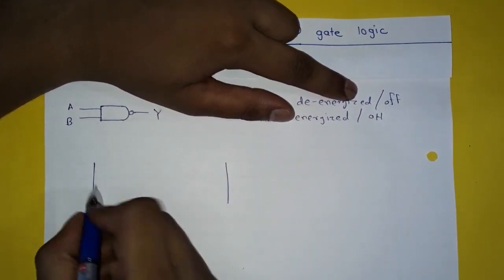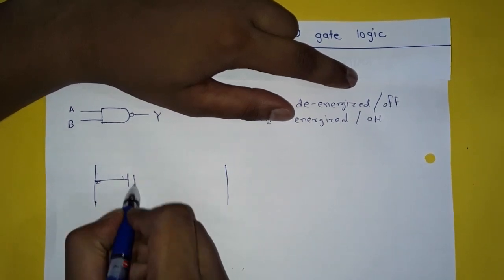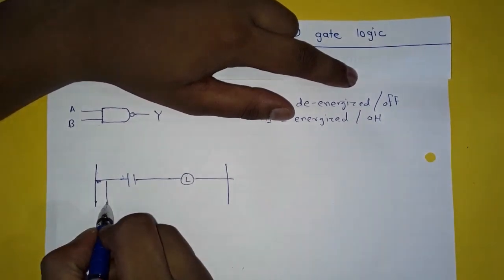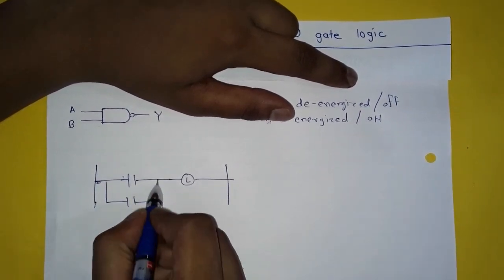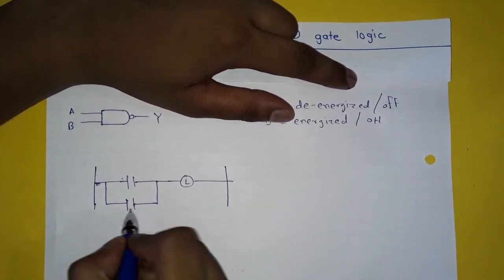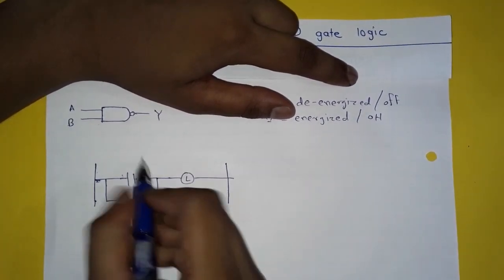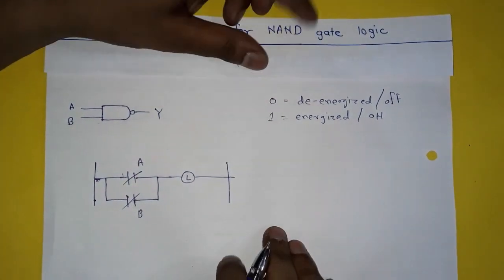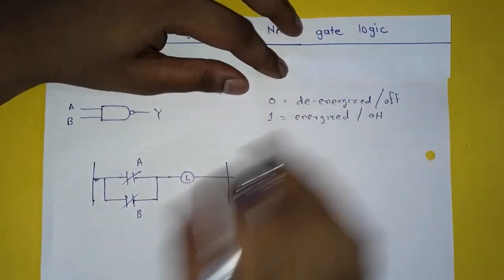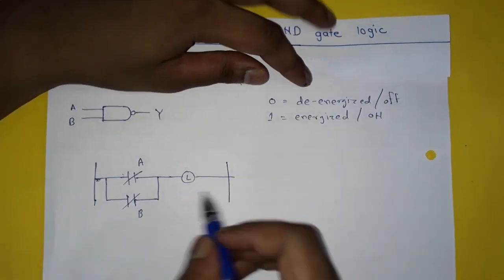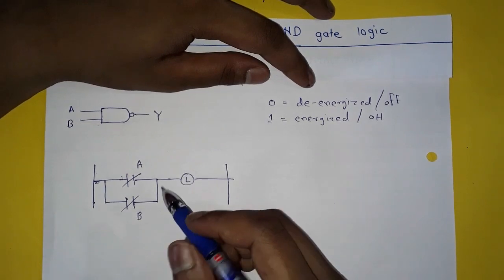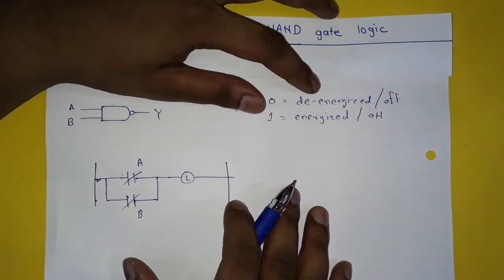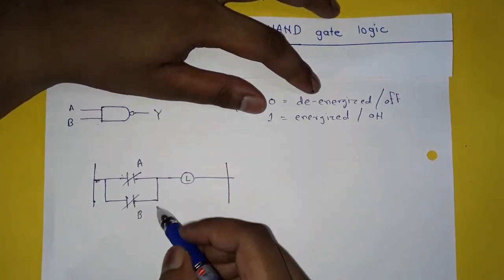These are the rungs — two rungs. This is a control relay or switch, and this is our lamp. This is another control relay or switch. Both remain in normally closed condition — A and B. Remember: in NAND gate logic in ladder diagram, we always keep both switches A and B in normally closed conditions and arrange them in parallel position.